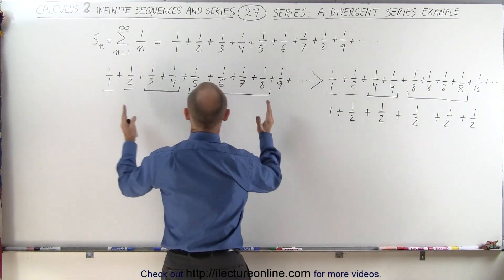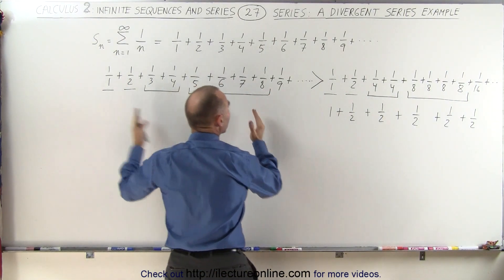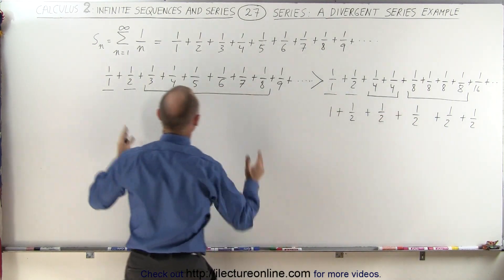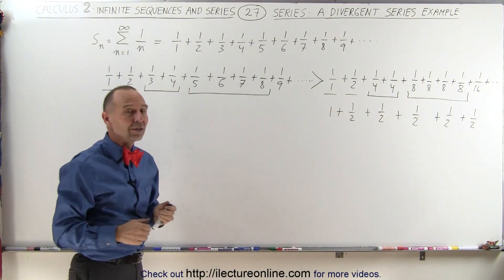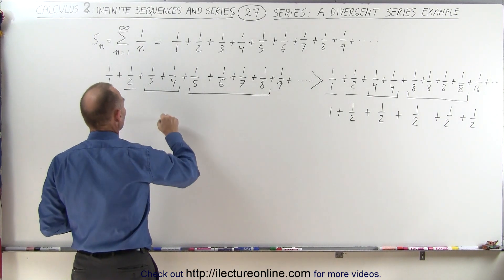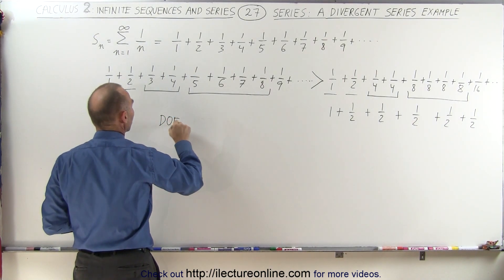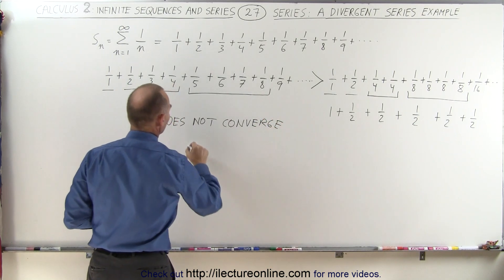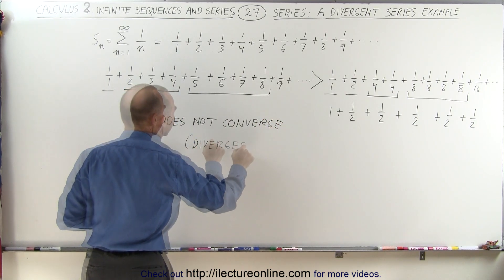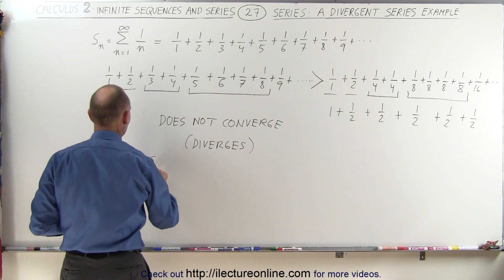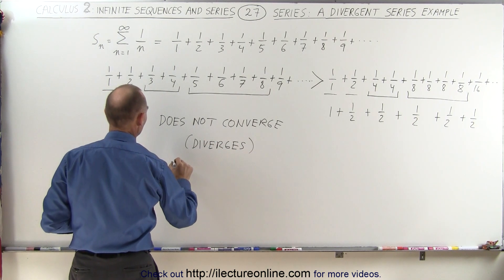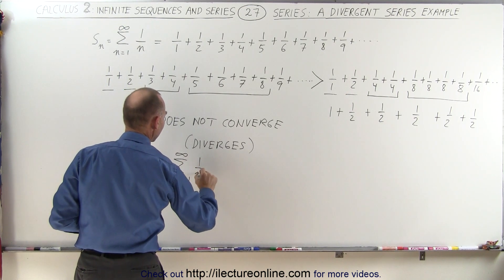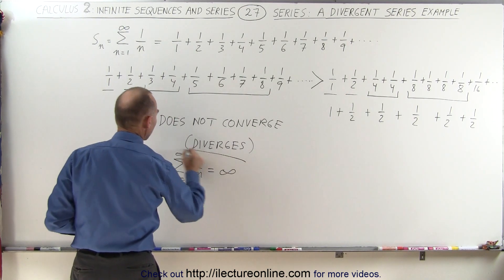Since I can keep adding 1 halves, this sum will never converge to a single number — it just keeps getting bigger and bigger by halves. And since the left side has to be bigger than the right side, if the right side doesn't converge, then the left side does not converge either. So we can say it does not converge, or in other words, it diverges. The infinite sum — the sum from n equals 1 to infinity of 1 over n — is equal to infinity.